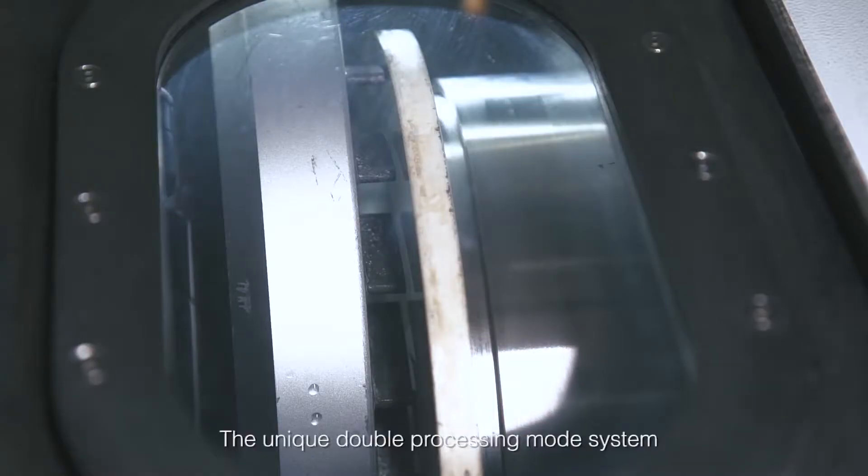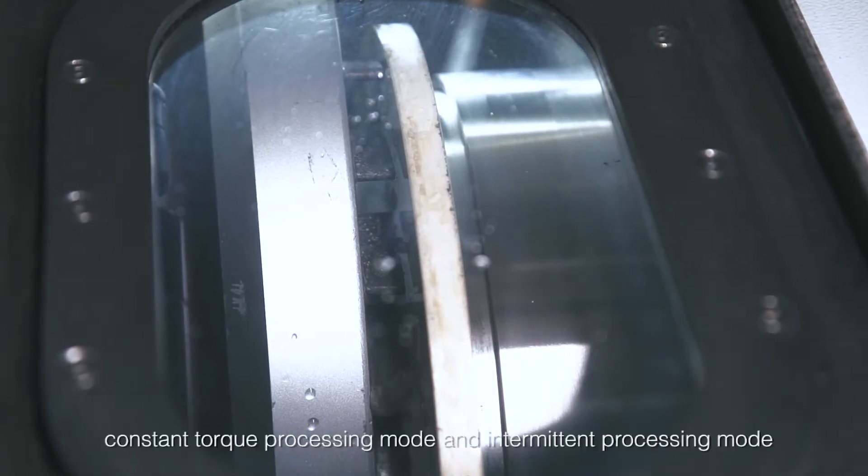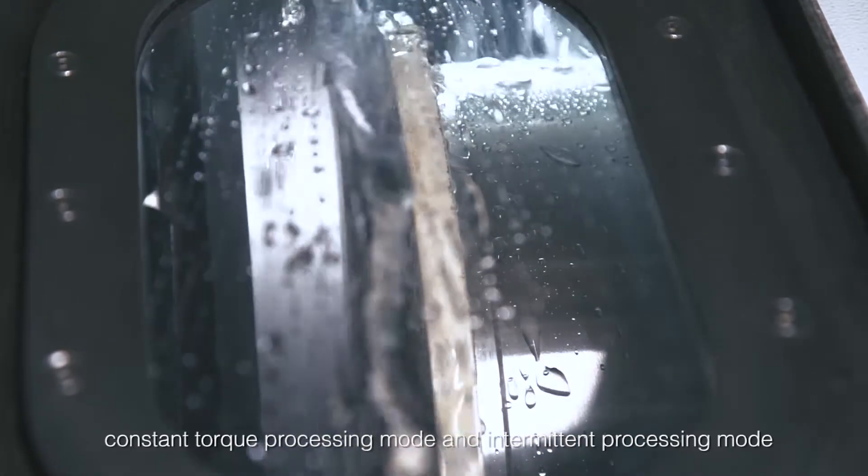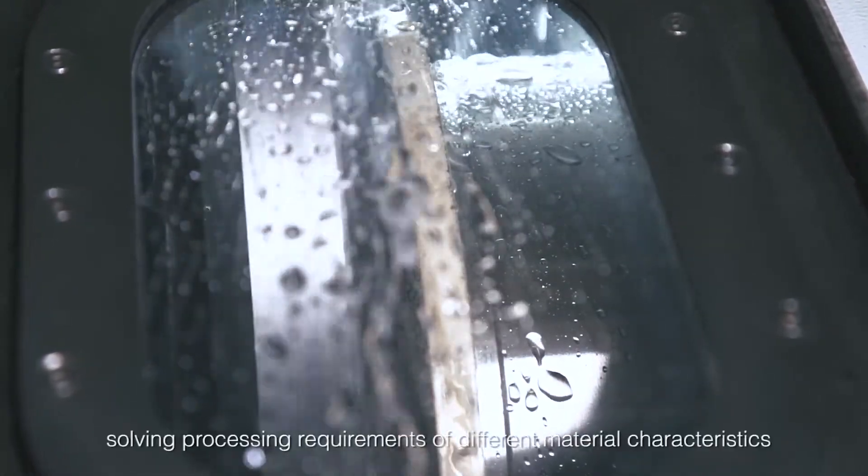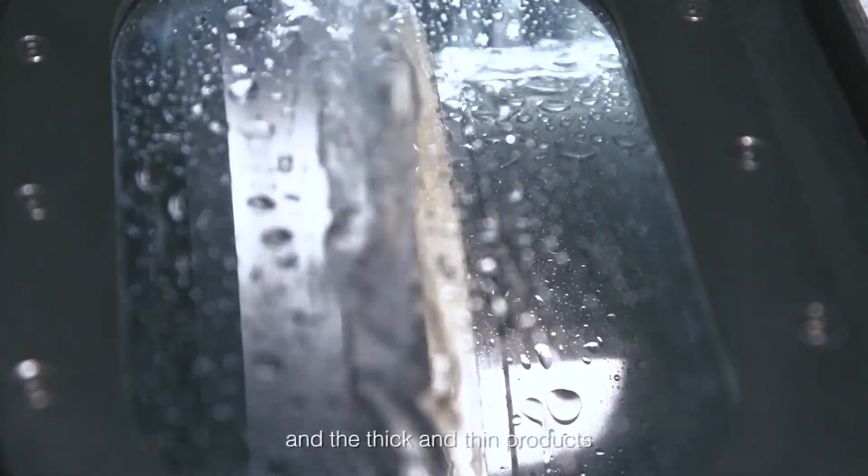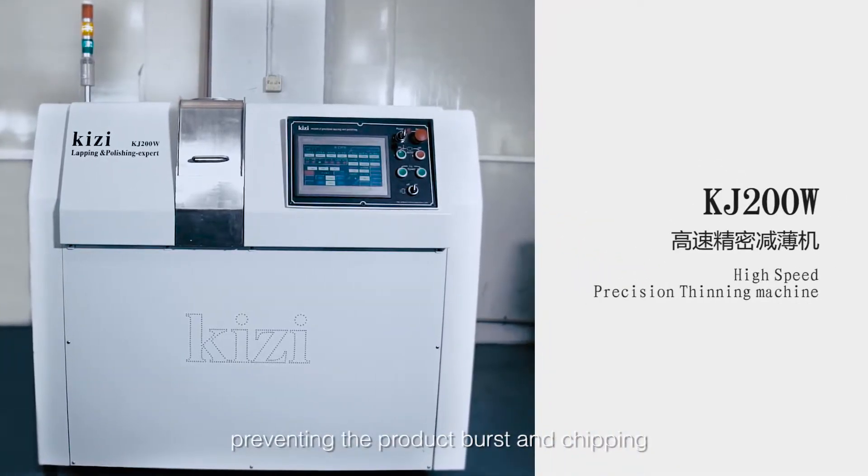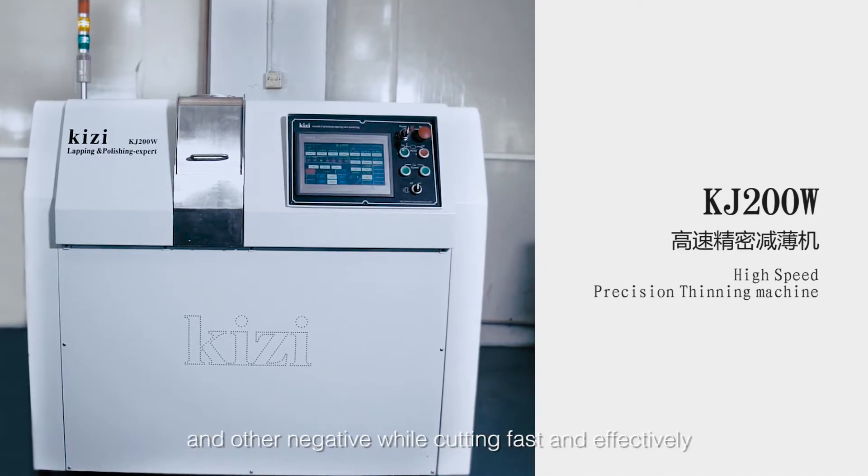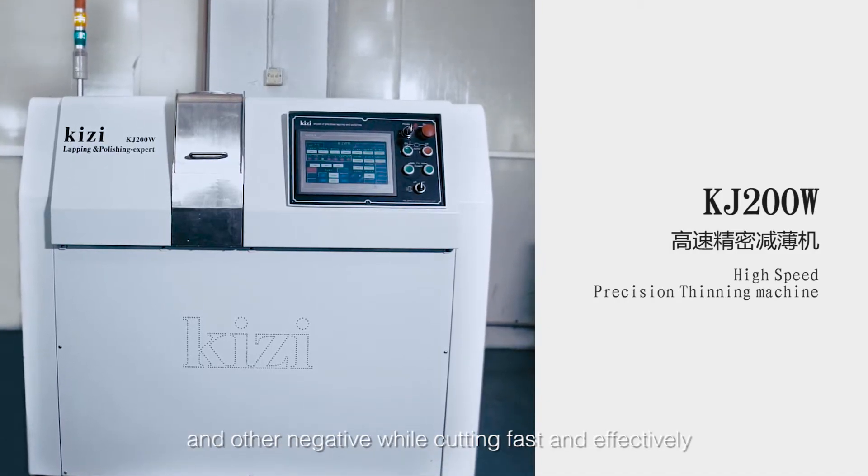The unique double processing mode system includes constant torque processing mode and intermittent processing mode, solving processing requirements of different material characteristics and thick and thin products, preventing the product burst and chipping while cutting fast and effectively.